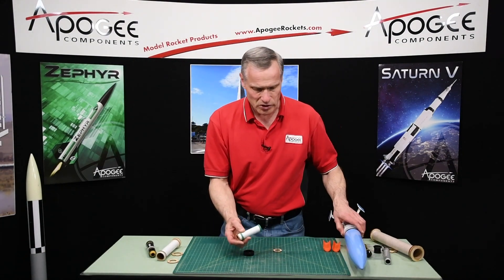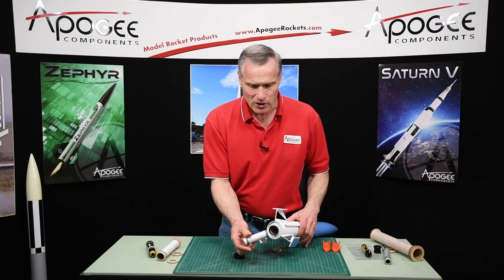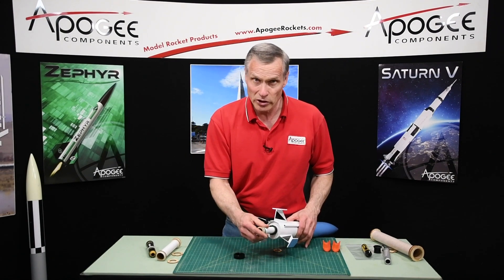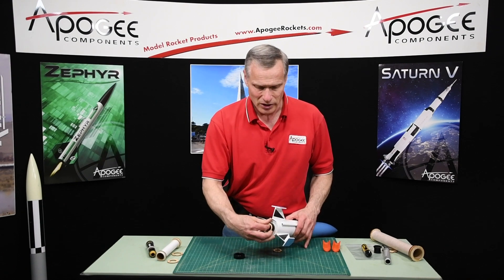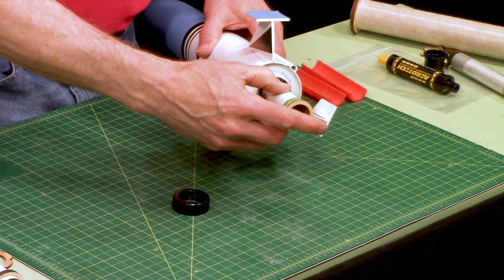So the way this works is you unscrew the cap off of the engine mount, you slide in the tube. It only goes in one direction, it won't go in this direction, so you have to put it in this direction.